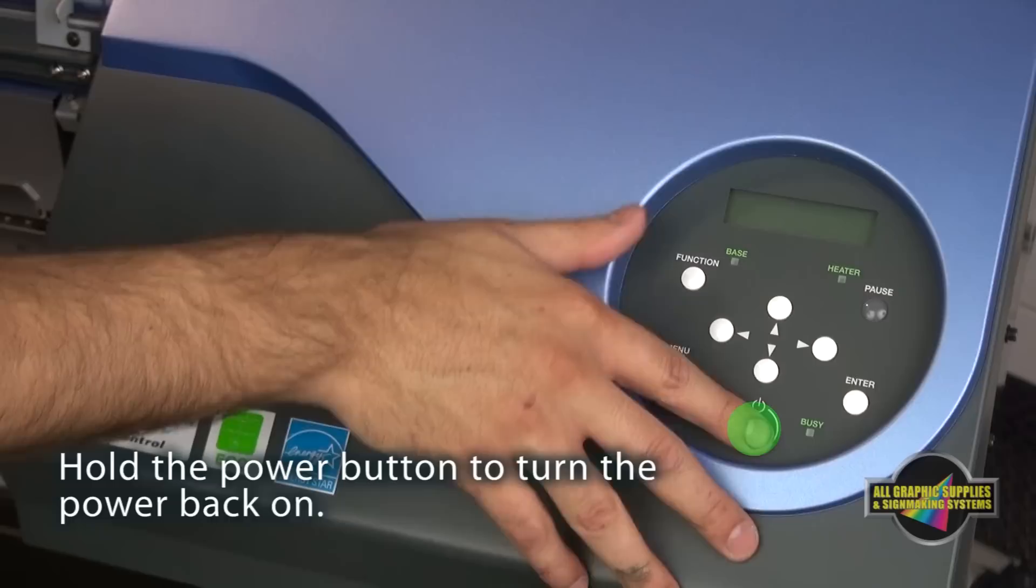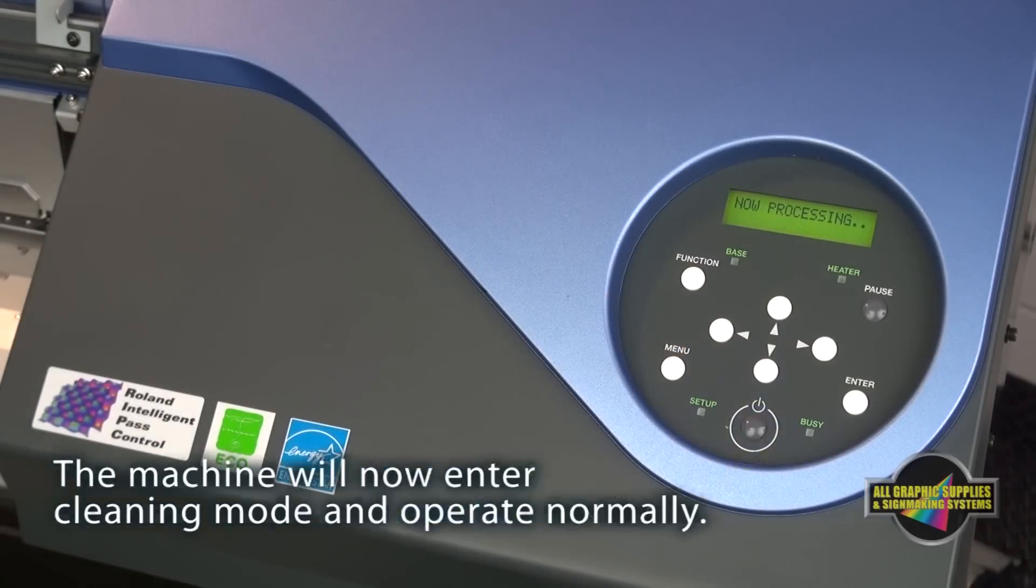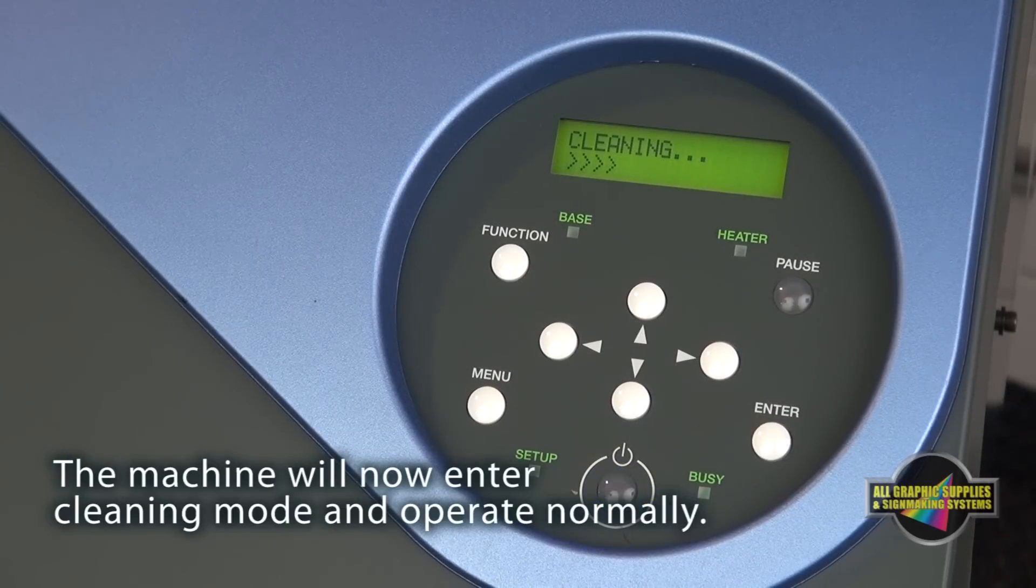Hold the power button down to turn on the machine. Once the VS enters cleaning mode, it will function normally.